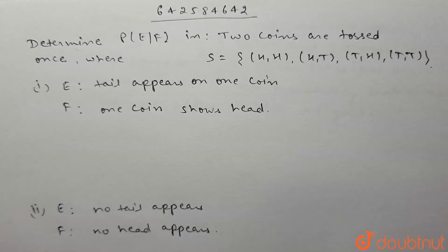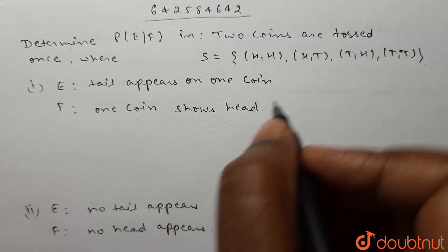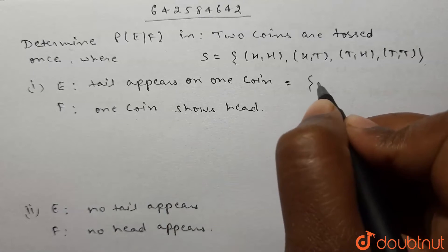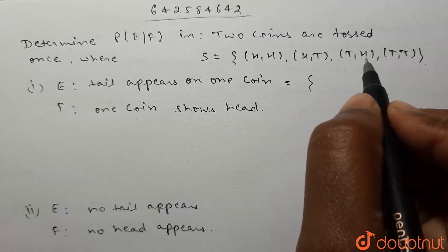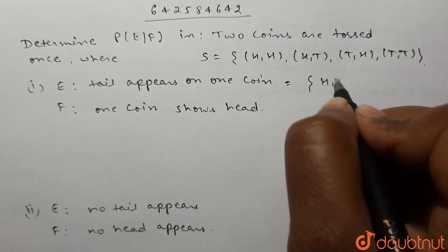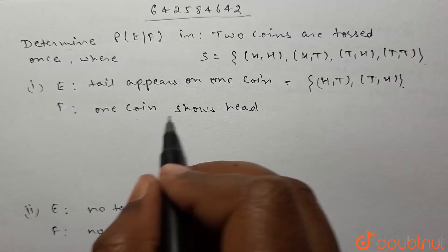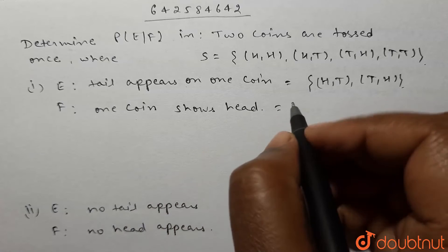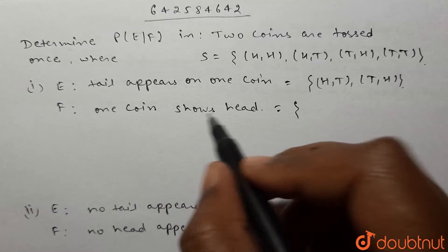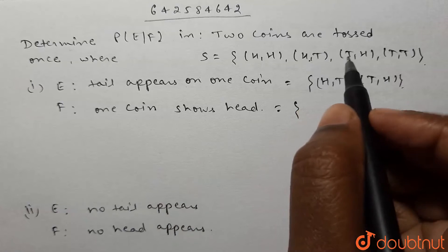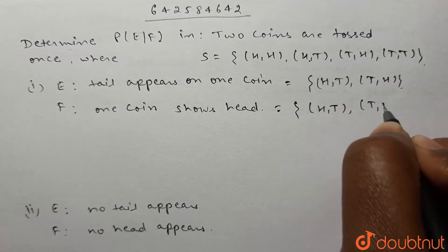In the first part, event E is tail appears on one coin, so it will contain elements {H,T} and {T,H}. Event F is one coin shows heads, so F will also contain elements {H,T} and {T,H}.